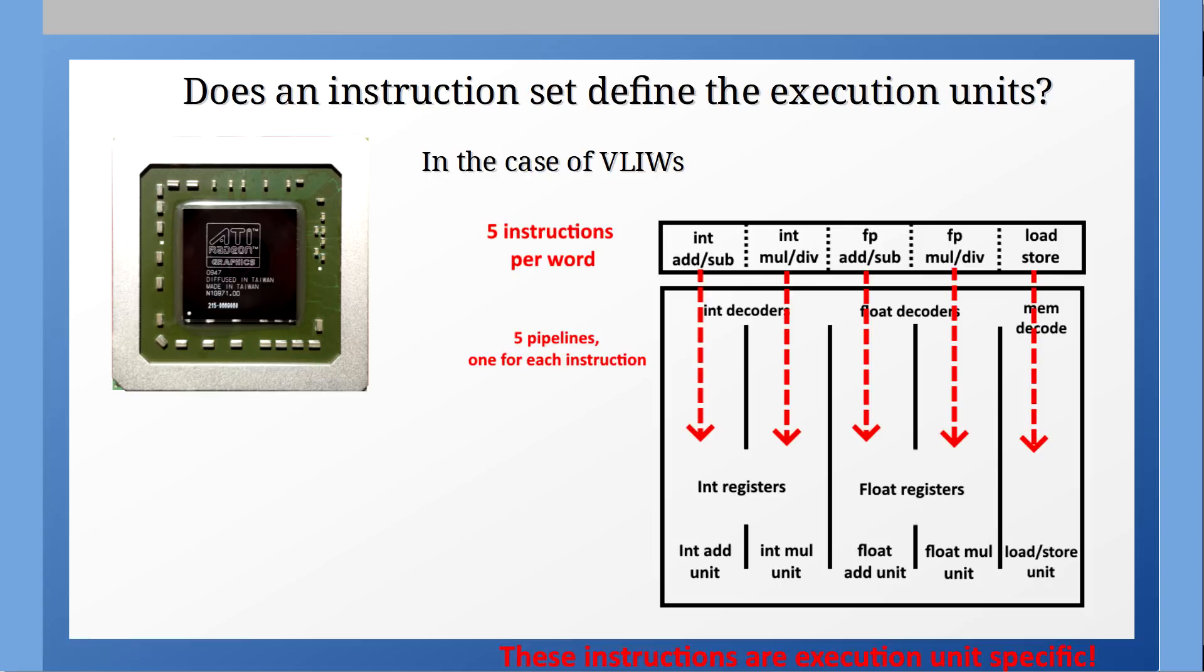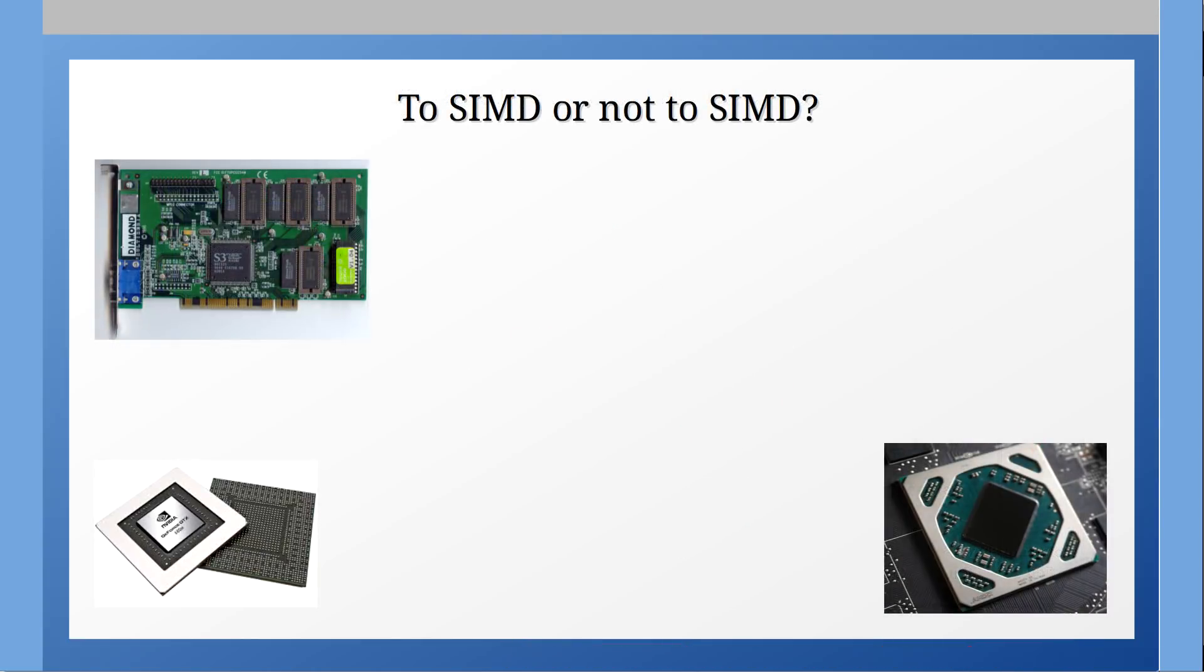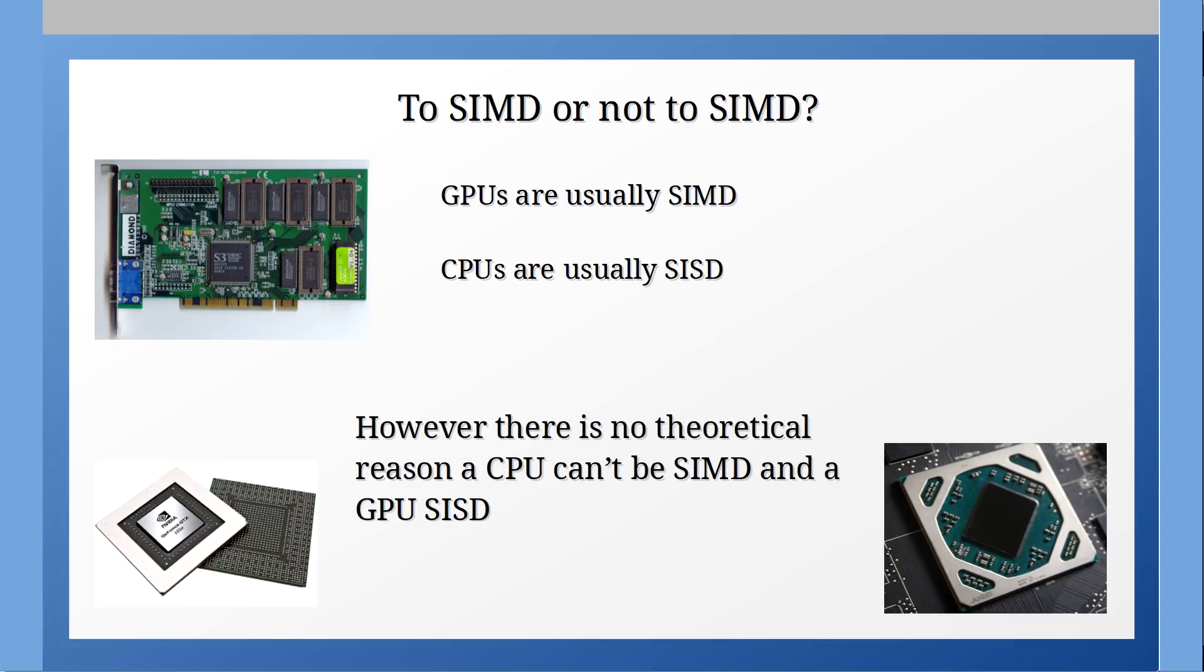So moving on you may have heard of the term SIMD usually regarding graphics cards. GPUs are the most common processors that use SIMD instruction sets but theoretically there is no reason a GPU has to be SIMD. Conversely most CPUs aren't SIMD, they are almost exclusively SIST but again there is no theoretical reason why a CPU can't be exclusively SIMD but in both cases there are practical reasons why we do have SIST CPUs and SIMD GPUs.